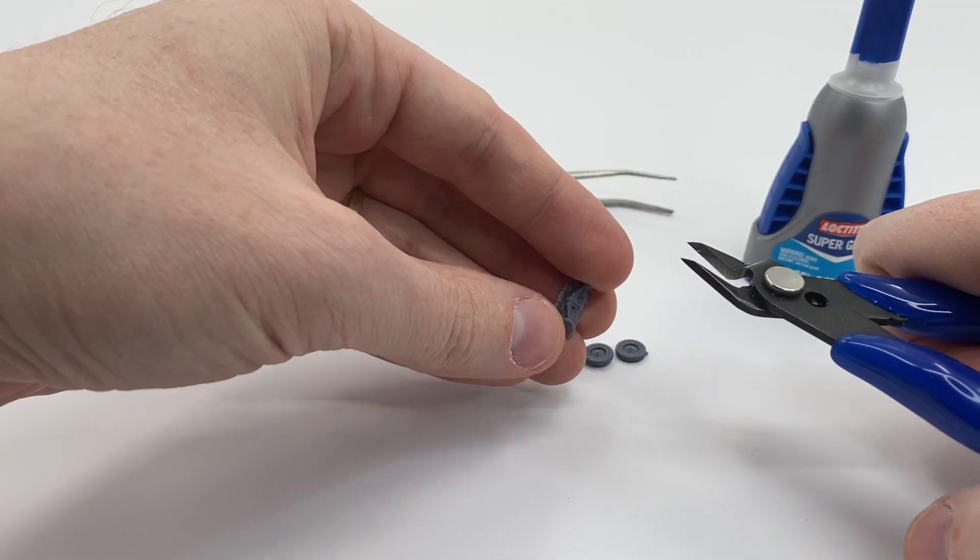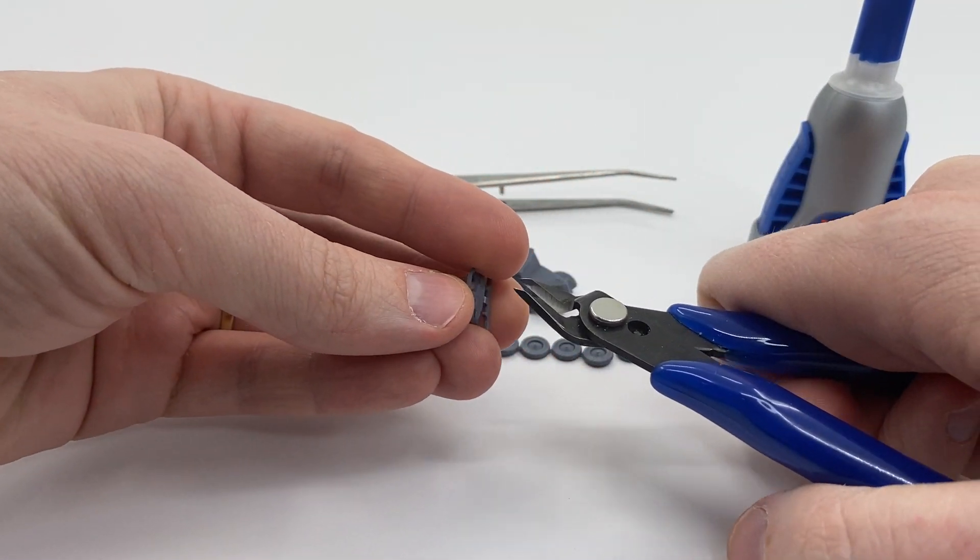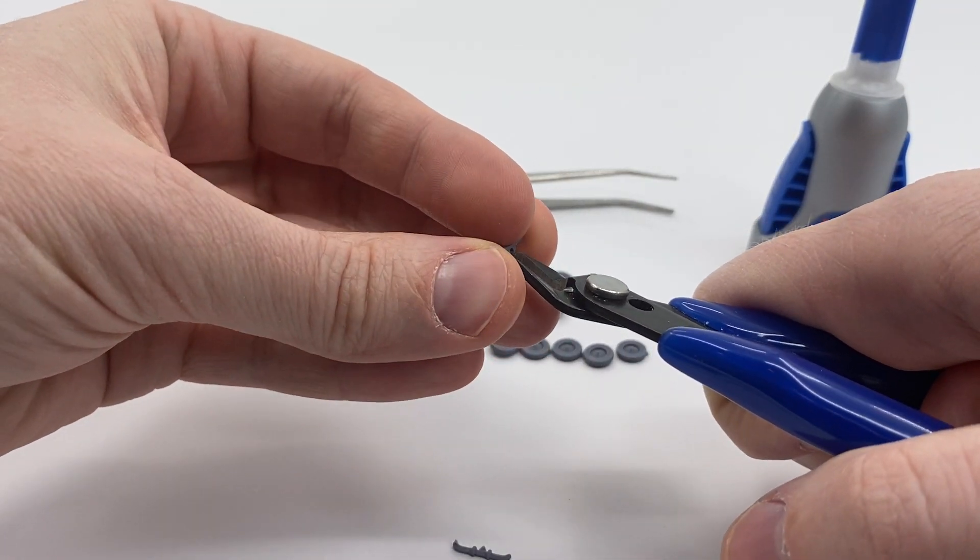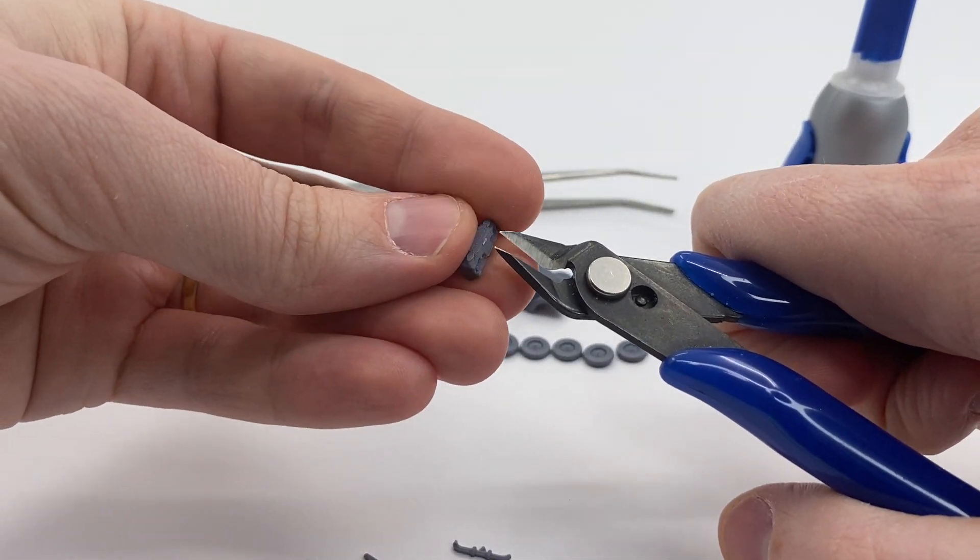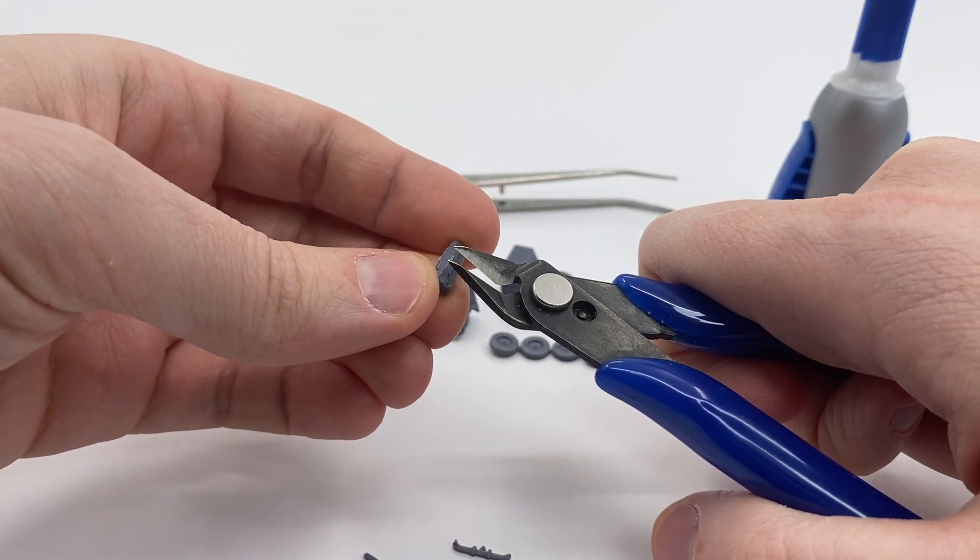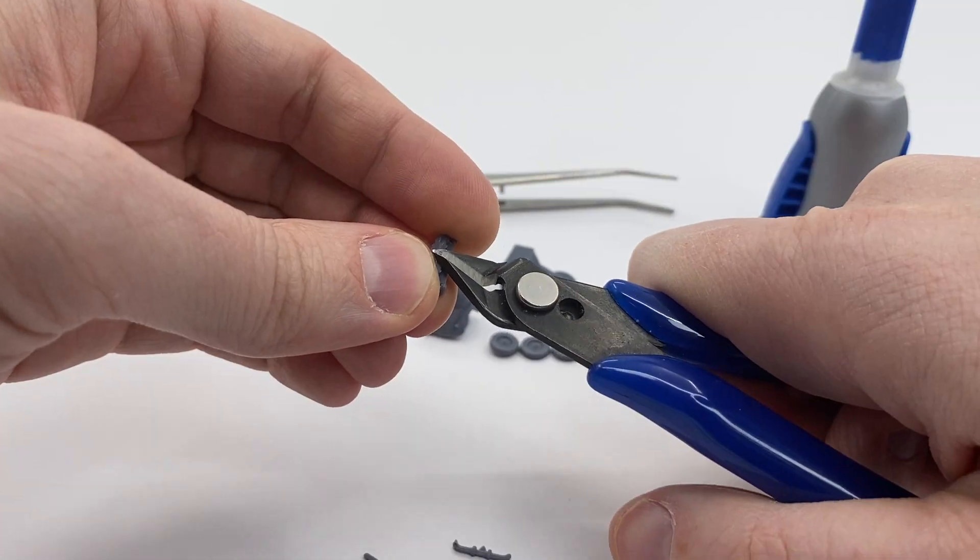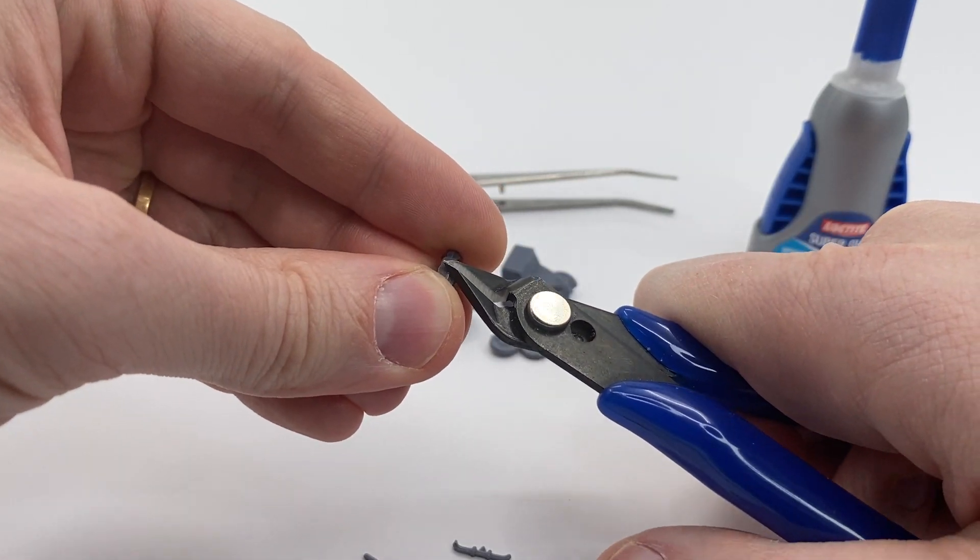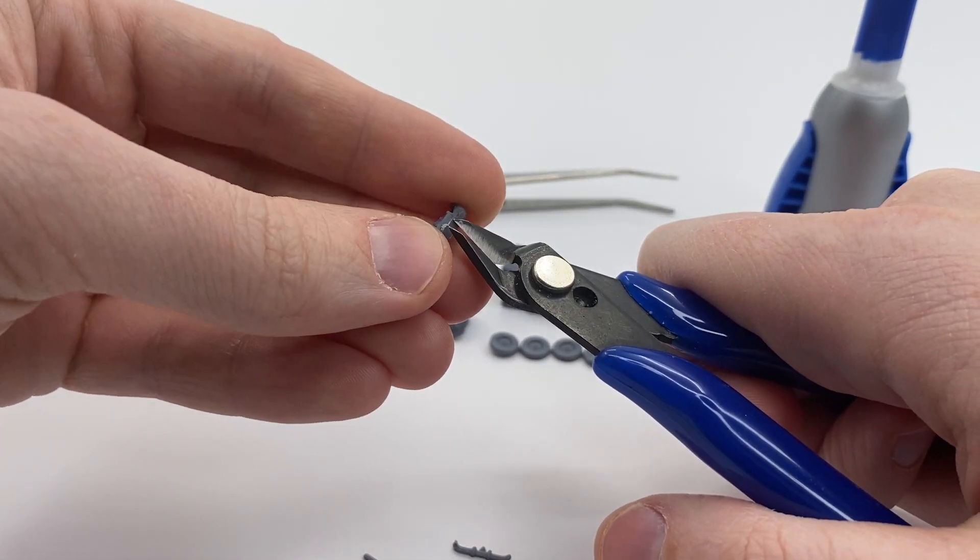Alright, so the first step for the assembly of this is to cut away at the sprues. Now, depending on the scale of the vehicle that you're getting, this may be an intricate process. I'm working with a 15mm scale.